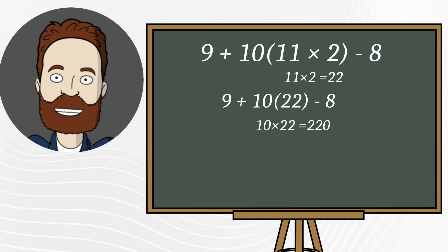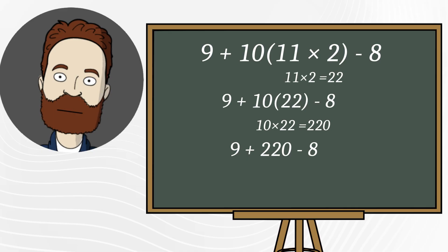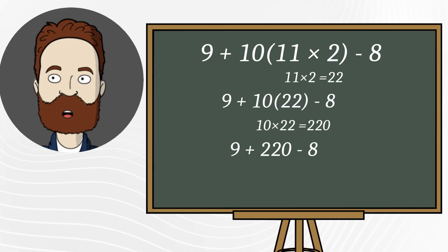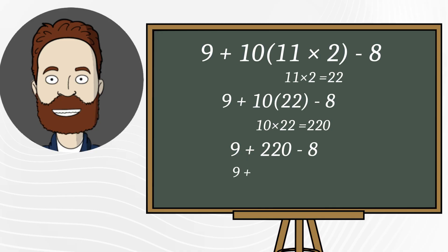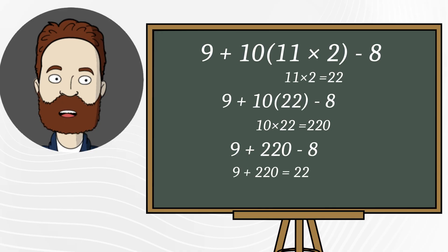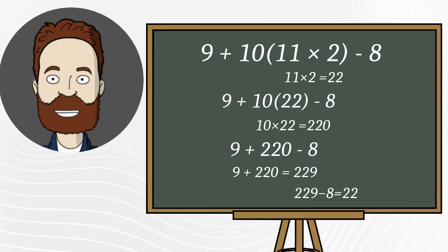Now our expression looks like this, 9 plus 220 minus 8. Now we are left with only addition and subtraction. They have the same priority, so we go from left to right. First, 9 plus 220 equals 229. Then 229 minus 8 equals 221.